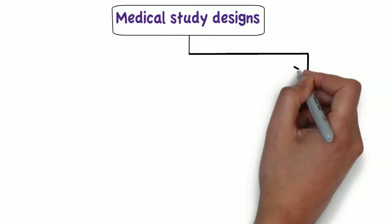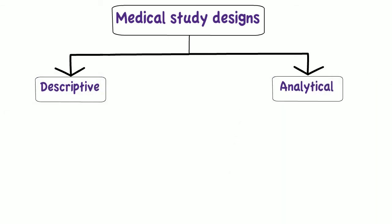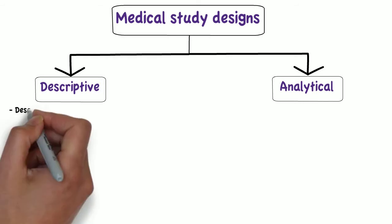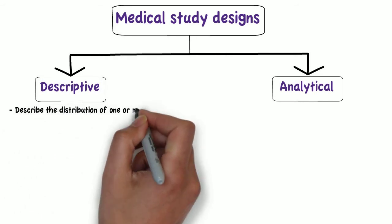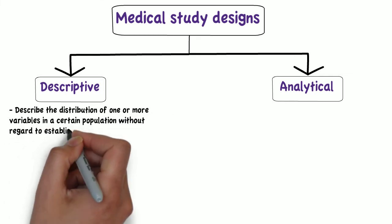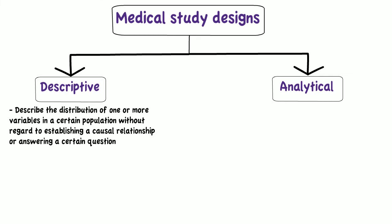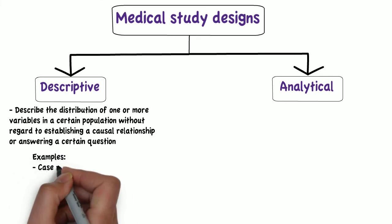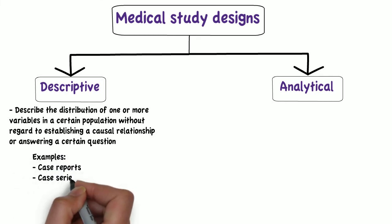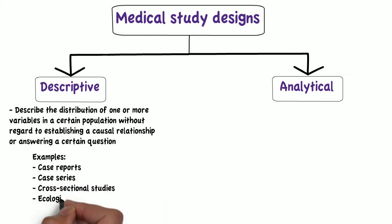Medical study designs can be divided into descriptive or analytical studies. Descriptive studies, as the name implies, are those designed to describe the distribution of one or more variables in a certain population without regard to establishing a causal relationship. Examples of descriptive studies are case reports, case series, cross-sectional studies, and ecological studies.